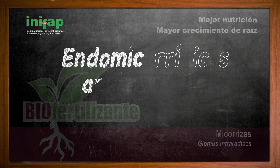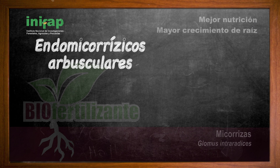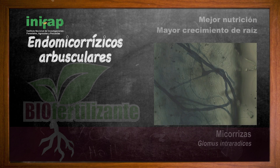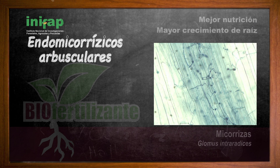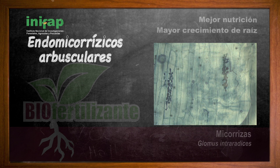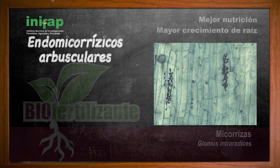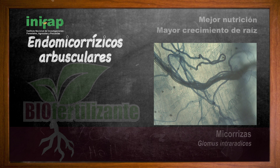Otro tipo de hongos micorrísicos no se pueden ver fácilmente por su tamaño. A estos hongos se les conoce como endomicorrísicos arbusculares, porque se desarrollan dentro de la raíz de la planta. Este tipo de hongo se encuentra en la mayoría de las plantas cultivadas.